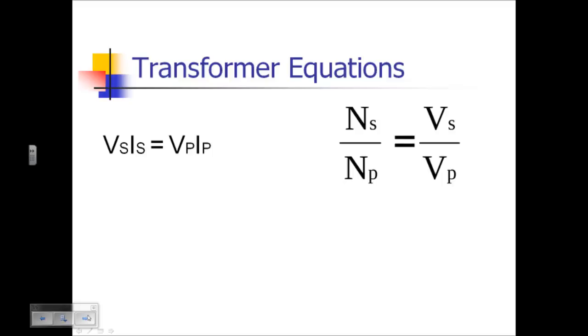So a couple of the equations for transformers is Vs times Is is going to be equal to Vp times Ip. This is basically the conservation of energy, which means voltage times current on the secondary is going to be equal to voltage times current of the primary.